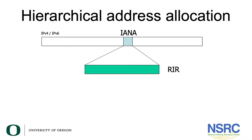The five regional internet registries are: AFRINIC, which is responsible for the Africa region; APNIC, which is responsible for the Asia Pacific region; ARIN, which is responsible for the United States, Canada, and many Caribbean and North Atlantic islands; LACNIC, which is responsible for Latin America and the Caribbean; and RIPE NCC, which is responsible for Europe, the Middle East, and parts of Central Asia.